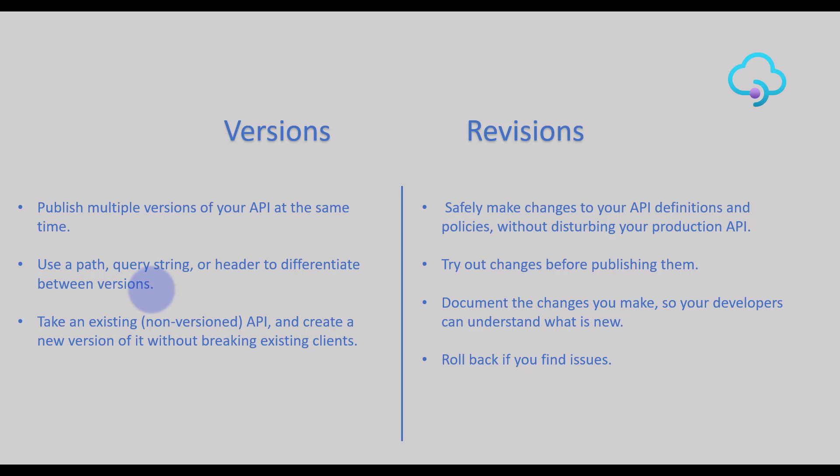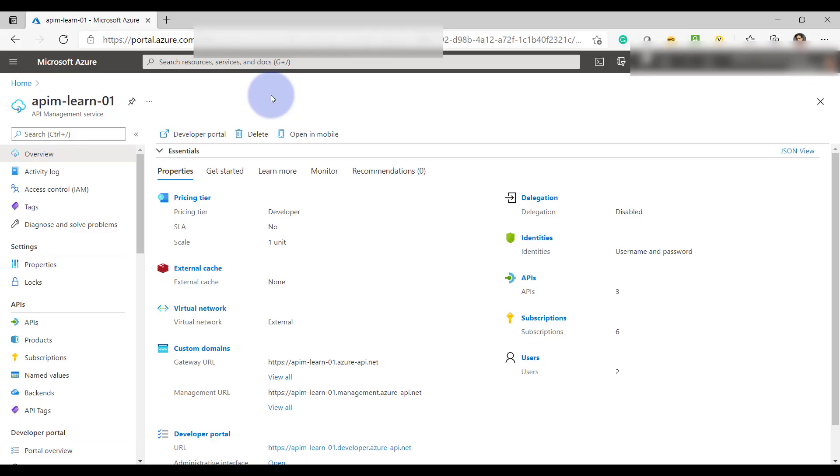For a clear understanding of the difference between these two concepts: use revisions when you are in a development phase, when you are trying to add some enhancements to your API but you are not at the stage of publishing those changes yet, and you want to test them before they get deployed to production for end customers. API versioning is an offering where you can have multiple copies with different features so customers can use either version.